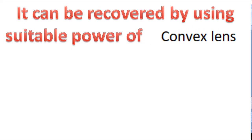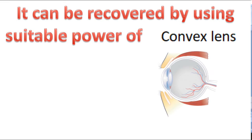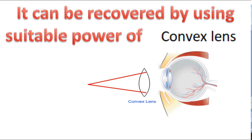Hypermetropia can be corrected by using a suitable power of convex lens, or converging lens. The converging lens converges the rays of light coming from the near object onto the retina, so a clear picture is seen.